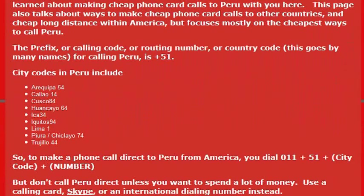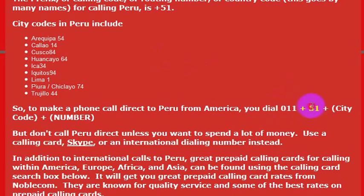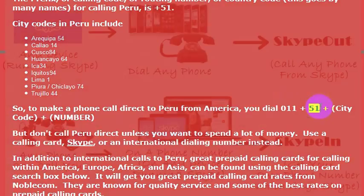In any case, if you want to call Peru to make travel arrangements or anything else, you'll need to know the country code, which is 51. So to make a call to Peru directly from the United States from a landline, you would dial 011, then 51, which is the country code for Peru, then the phone number you want to reach.